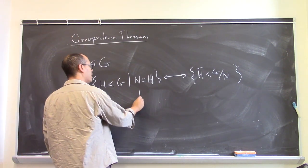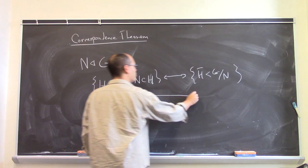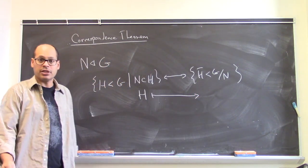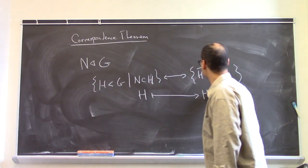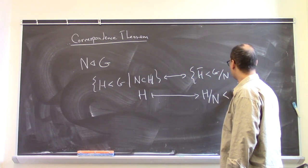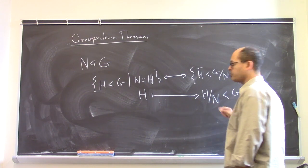Well, if somebody gives you a subgroup which contains N, then because N is contained in H, N is going to be normal inside H, and you can consider the quotient H mod N. That's the subgroup of G mod N. So that's the correspondence in one direction.